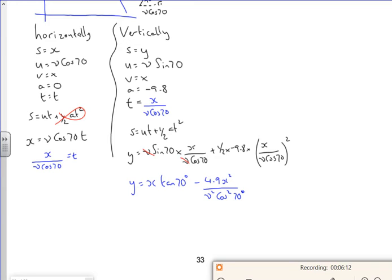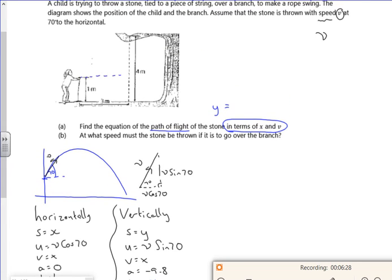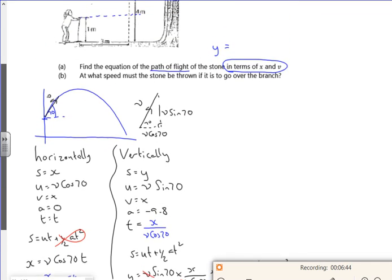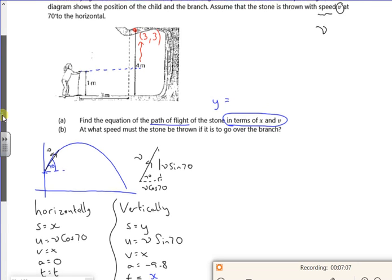Part B says, at what speed must a stone be thrown for it to go over the branch? Let's have a think about this. I've not taken into account the fact that it's one metre above. Maybe I should have put a plus one on there. Should I have really stuck a plus one on the end there to show that it's starting off one metre above. But I can be a little bit cheeky. This point is three metres across. If I've not put that plus one on there to show it's above, I'm actually only travelling three metres up. So I think if I use X to be 3 and Y to be 3, I think I'm OK.